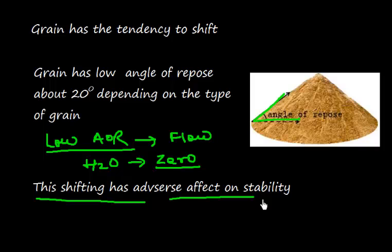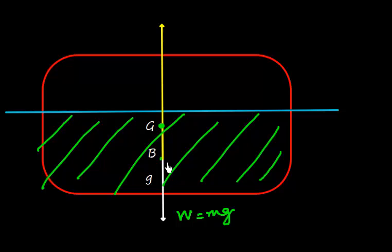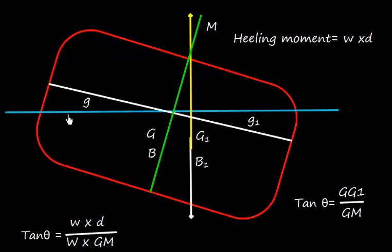This shifting has adverse effect on stability of the vessel. Let us consider this is a vessel. W equals MG. This weight acts vertically downward from center of gravity. This is the underwater volume, and the center of buoyancy is the geometrical center of this underwater volume. The force of buoyancy acts vertically upward. We are looking at the ship in transverse direction, from port to starboard.